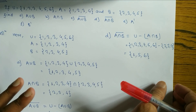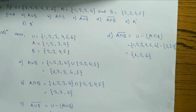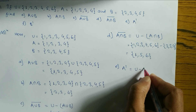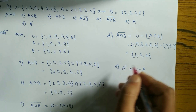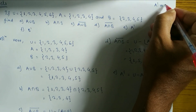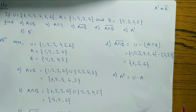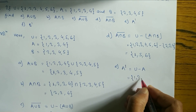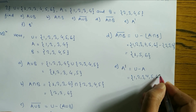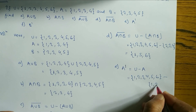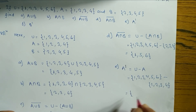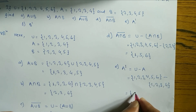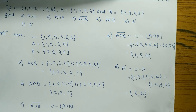Next, in part (e) we find A complement. The formula is U minus A. U = {1, 2, 3, 4, 5, 6} minus A = {1, 2, 3, 4}. Cancelling 1, 2, 3, 4 — what remains is 5 and 6. So A' = {5, 6}.